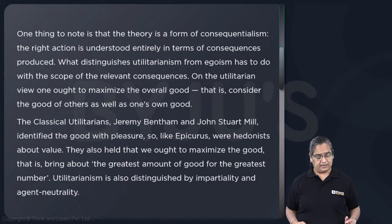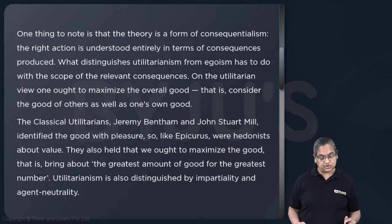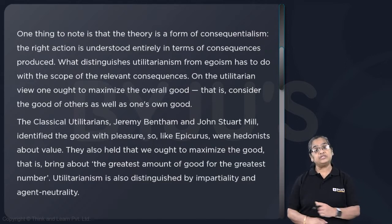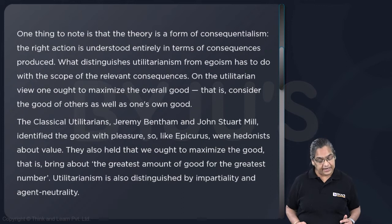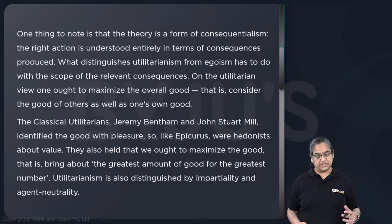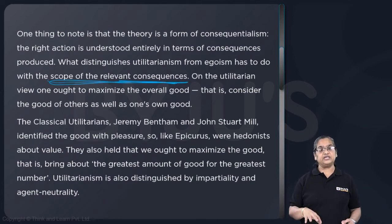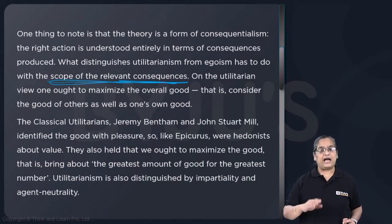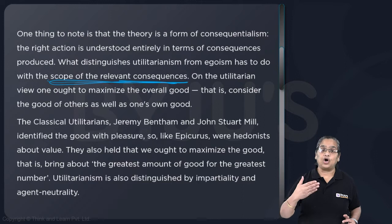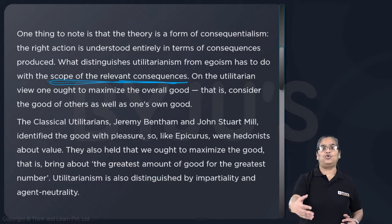That is the most important line of that paragraph. One thing to note is that the theory is a form of consequentialism — the right action is understood entirely in terms of consequences. So when do you say an action is correct? On the basis of its consequences. And what distinguishes utilitarianism from egoism has to do with the scope of the relevant consequences. Right action is the action that produces the maximum good — you know it's right in terms of the amount of good that it creates.